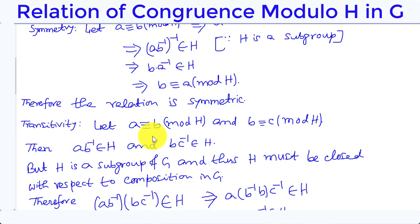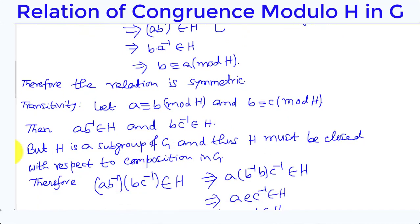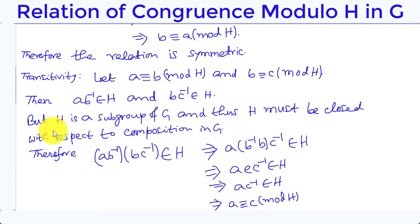Transitivity: Let A ≡ B (mod H) and B ≡ C (mod H). Then by the definition of congruency, A·B⁻¹ ∈ H and B·C⁻¹ ∈ H. But H is a subgroup of G and thus H must be closed with respect to composition in G.